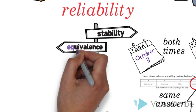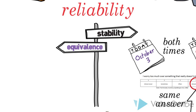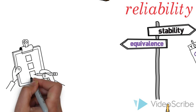That covers stability, the first way to measure reliability. But what about equivalence? Equivalence, or reproducibility, refers to the consistency of answers given to different data gatherers.